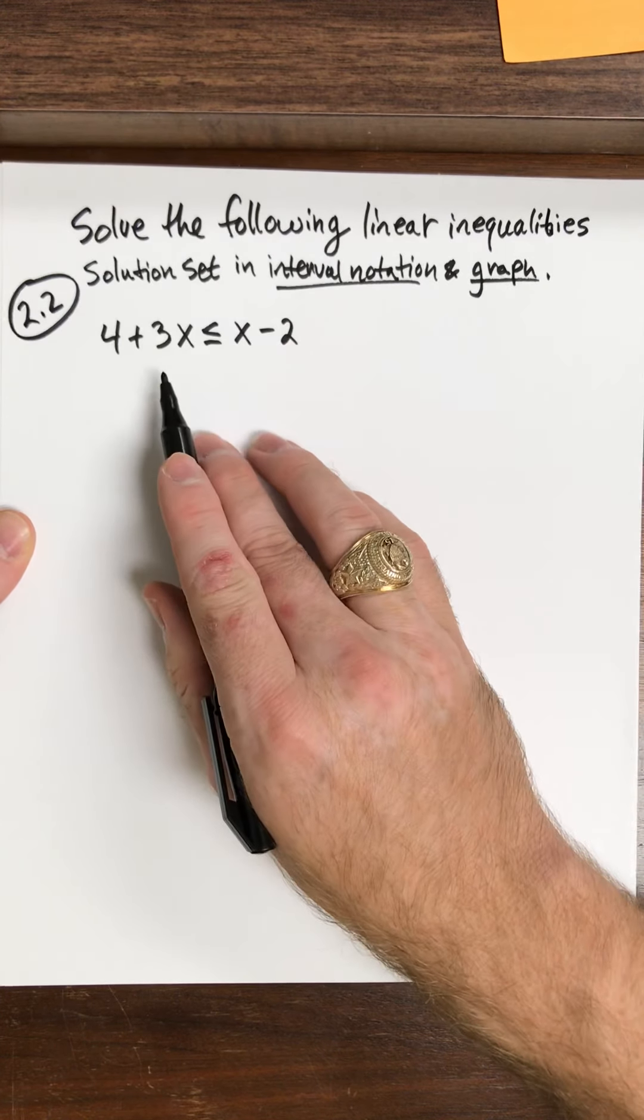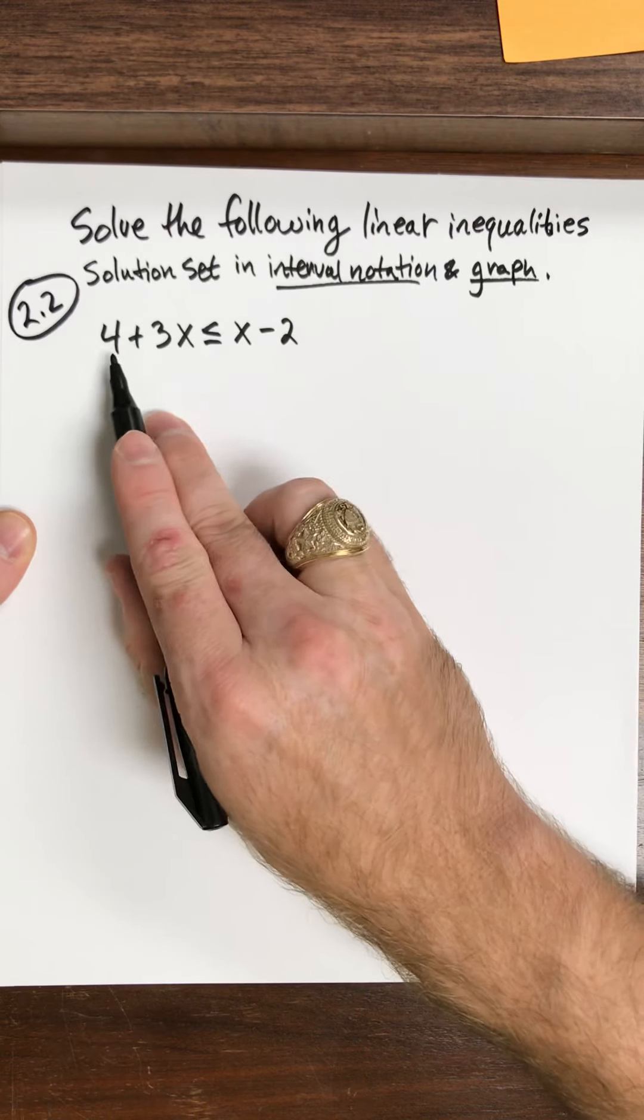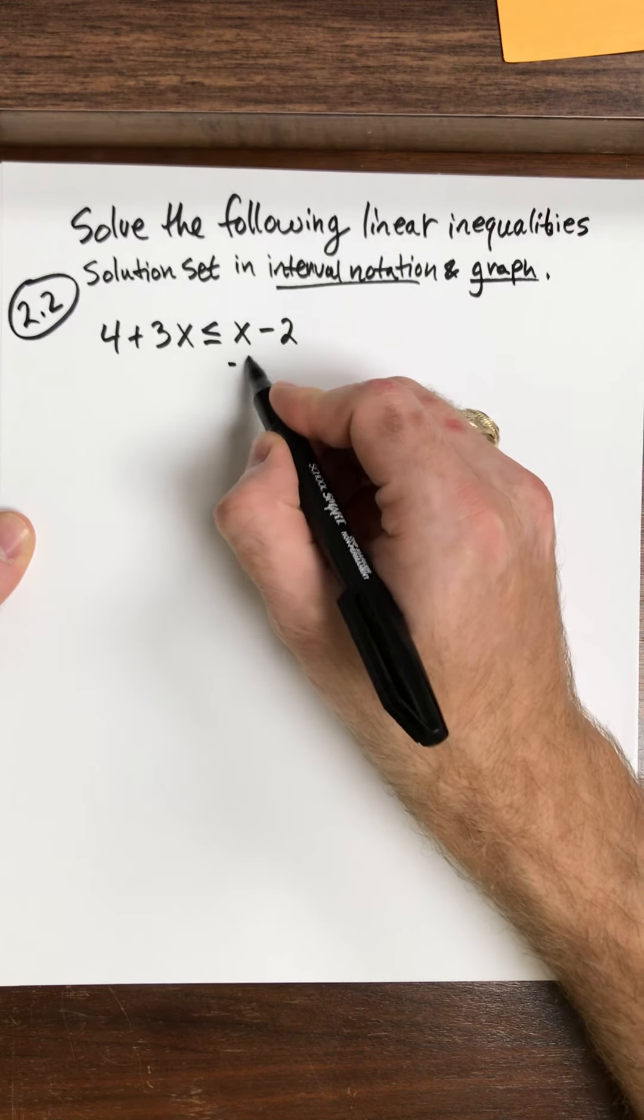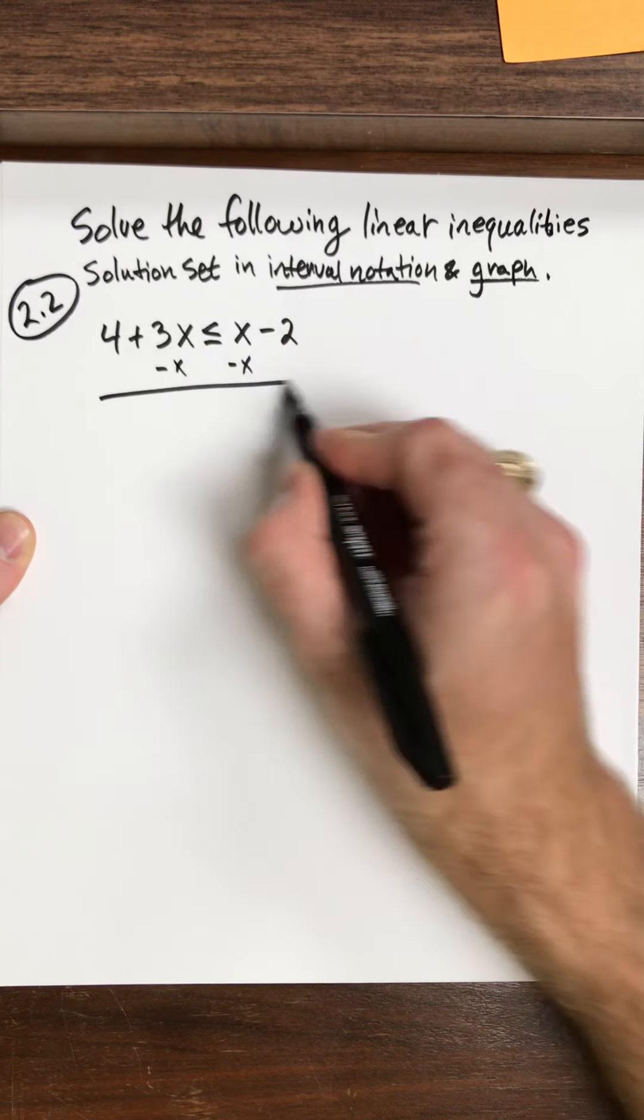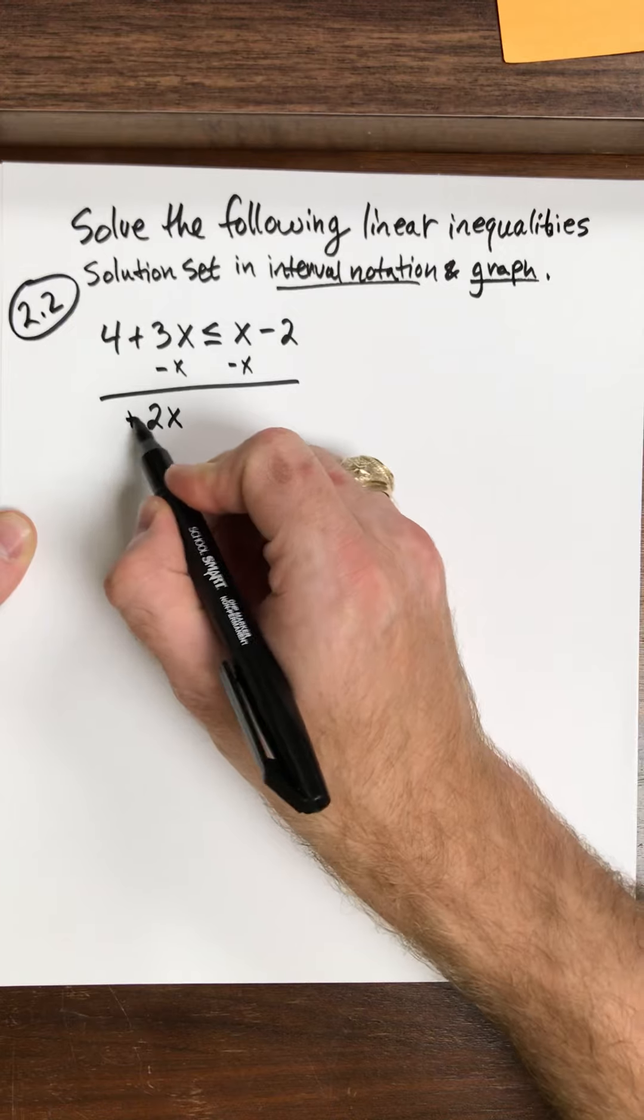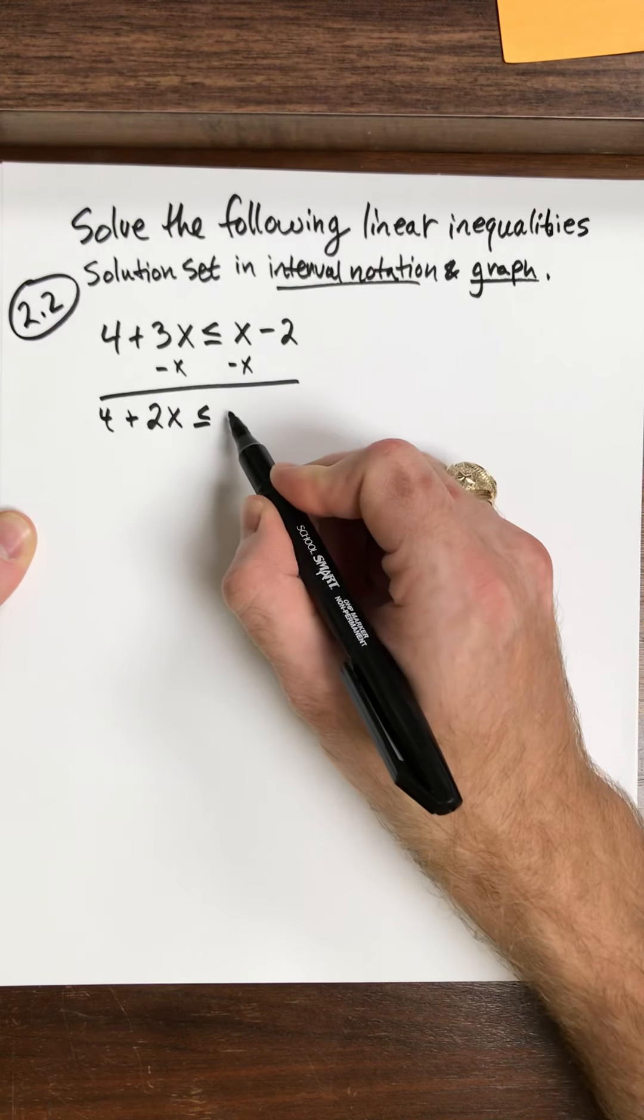So I want to get my x's, my variables to one side and then my numbers to the other. So to move this positive x, I subtract x from both sides and I have 2x, plus 4 is less than or equal to negative 2.